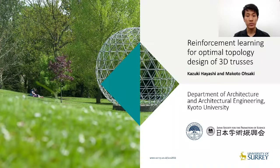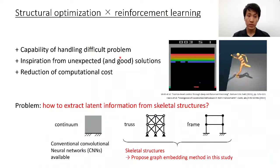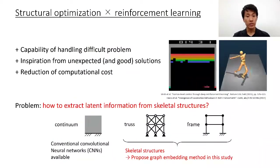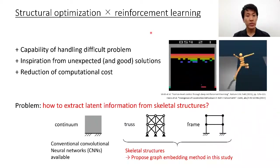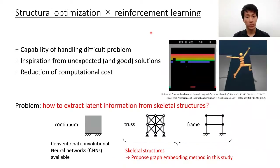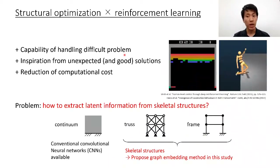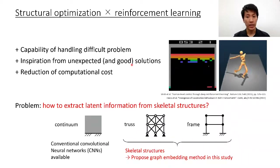I'm Kazuki Hayashi from Kyoto University. I'm going to talk about reinforcement learning for optimal topology design of 3D trusses. In this research, we propose a method that combines structural optimization and reinforcement learning. There are three advantages of this machine learning-driven approach: high predictive performance, new design alternatives generated from AI, and reduction of computational cost.